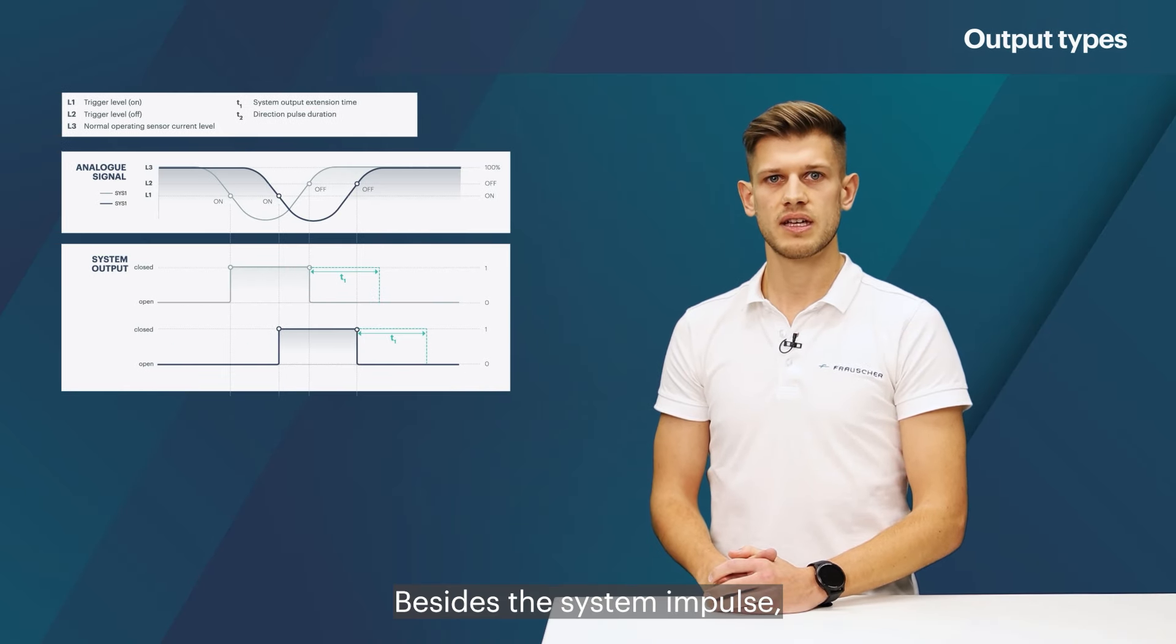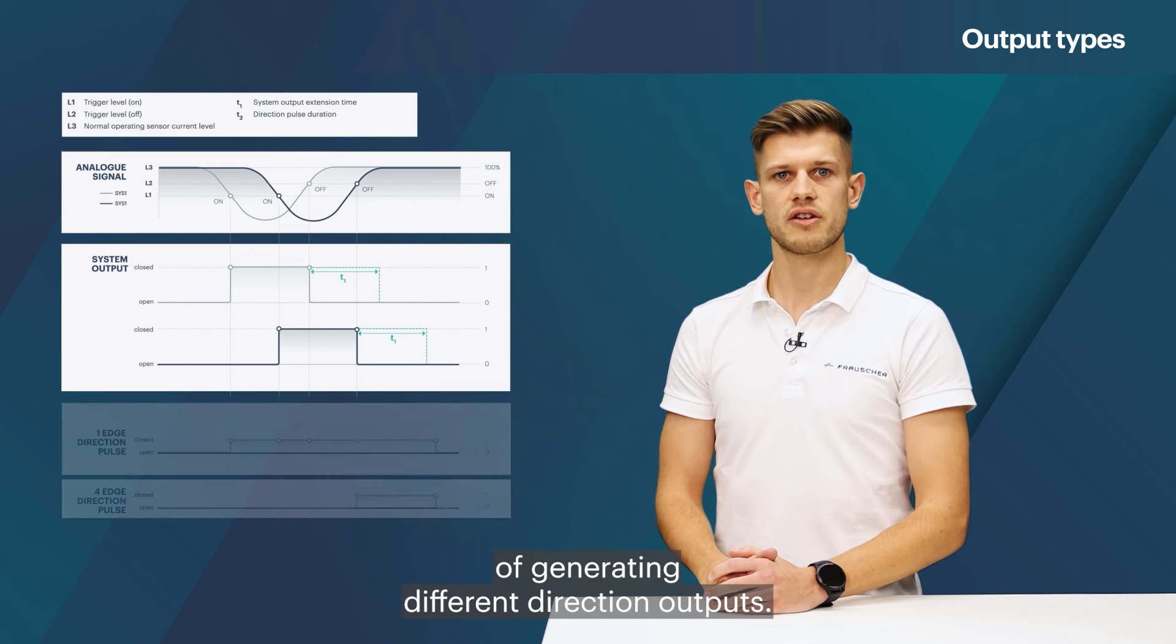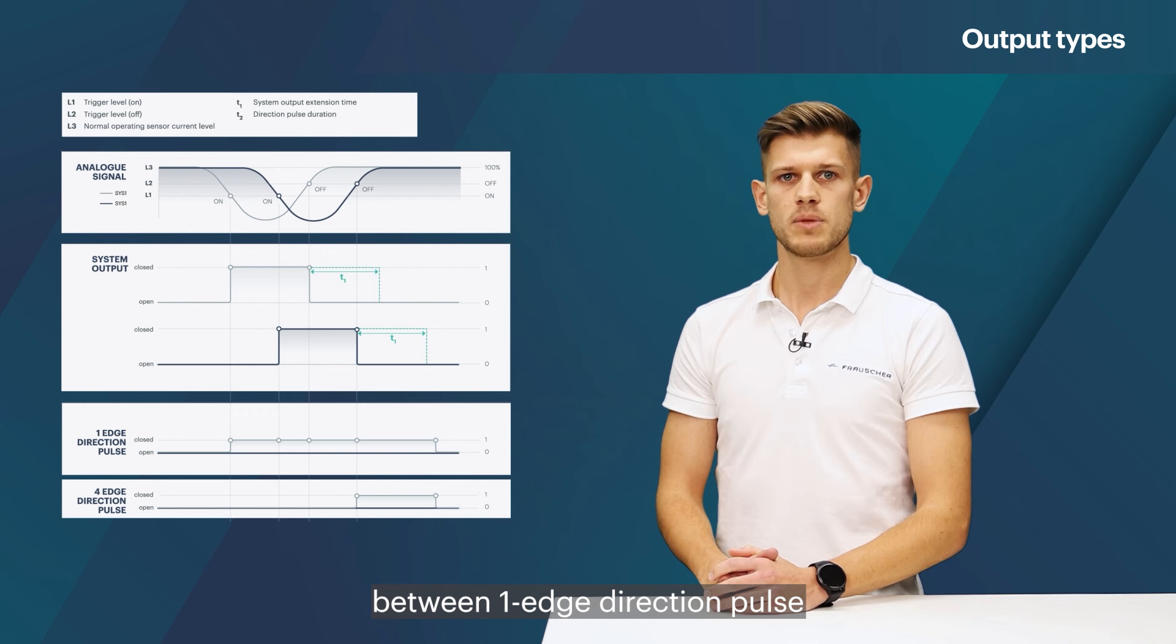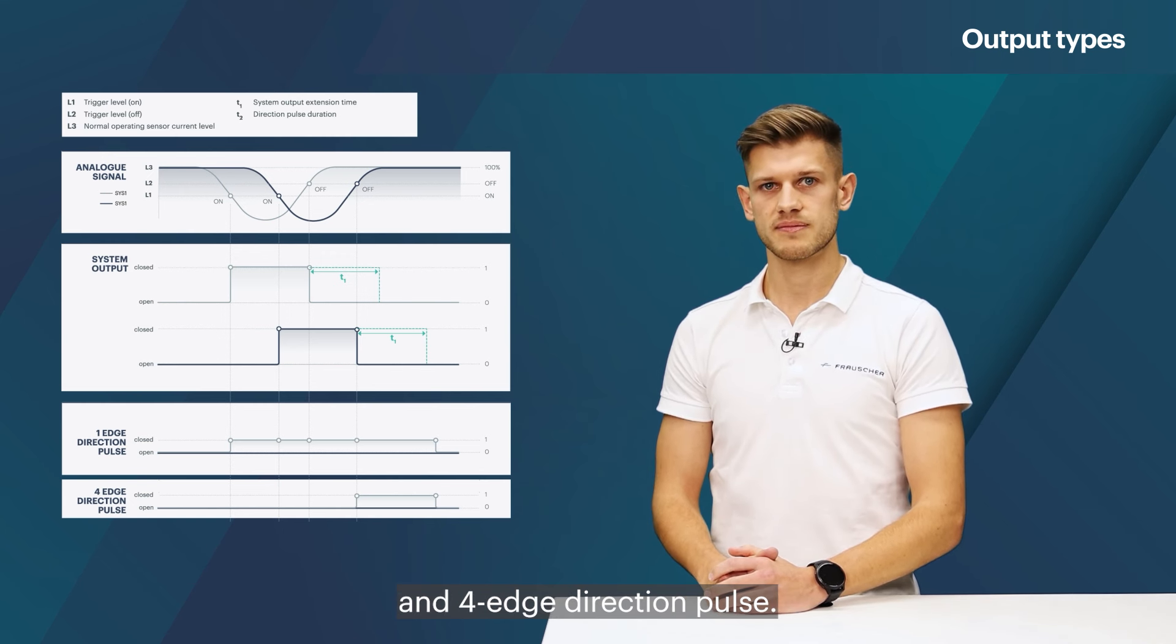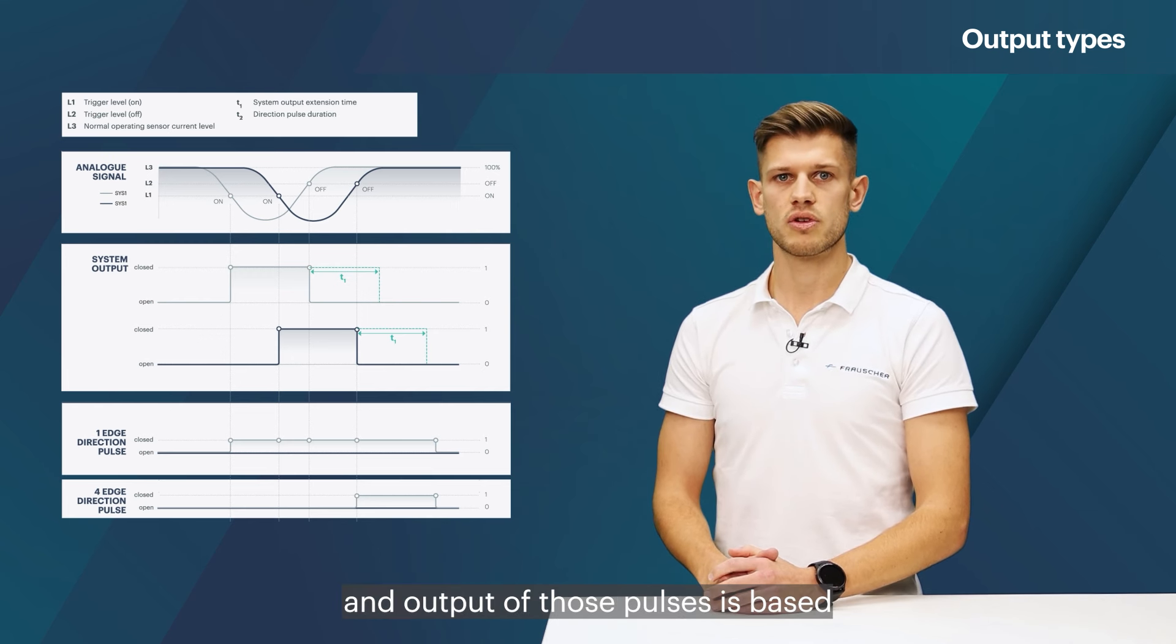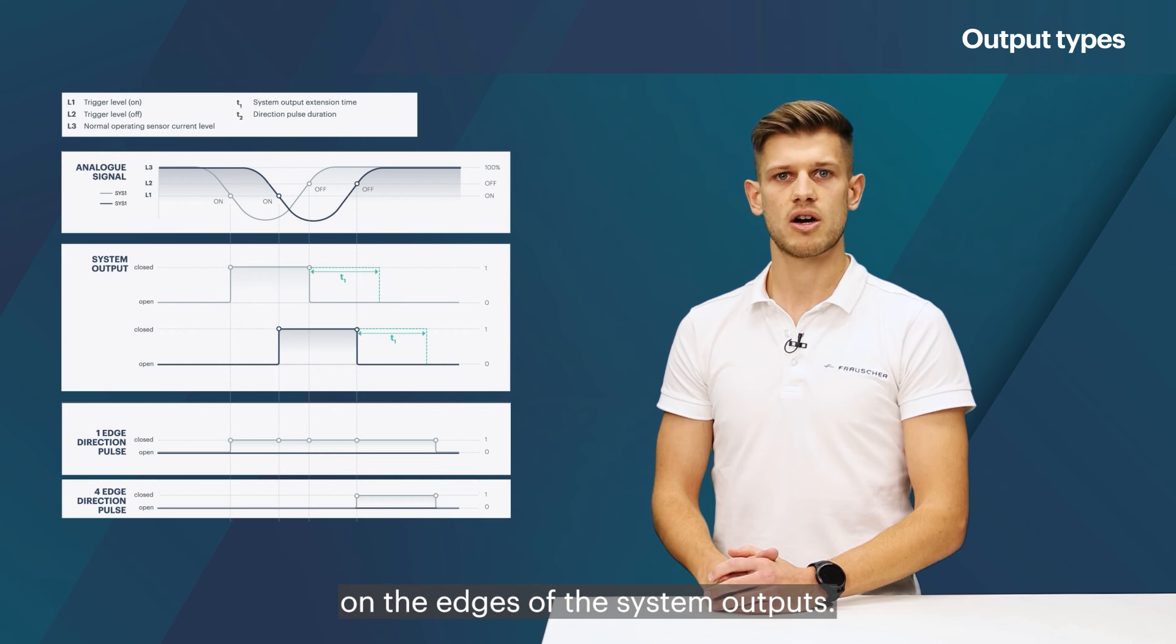Besides the system impulse, the evaluation board is also capable of generating different direction outputs. Here a distinction is made between one edge direction pulse and four edge direction pulse. As the names already indicate, the generation and output of those pulses is based on the edges of the system outputs.